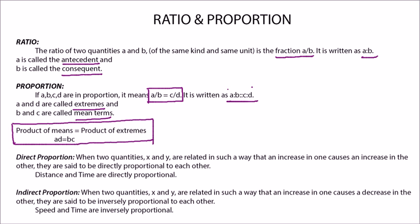Direct Proportion: When two quantities X and Y are related in such a way that if one increases, the other also increases. So if X increases, Y also increases. They are said to be in direct proportion.